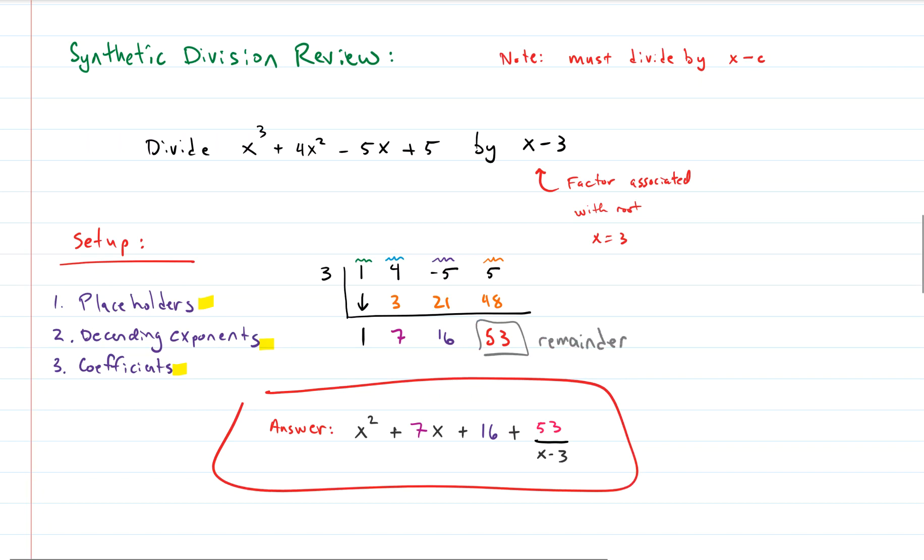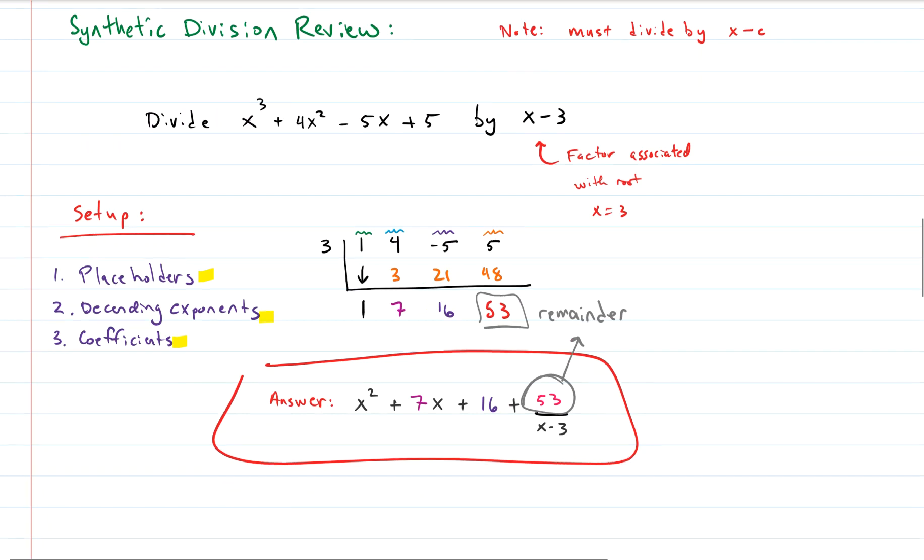Remember that. 53. This part right here, remainder. 53. So we just divided a long polynomial by x minus 3 and we got 53 as the remainder. Keep that in your head.